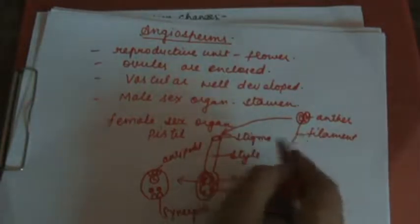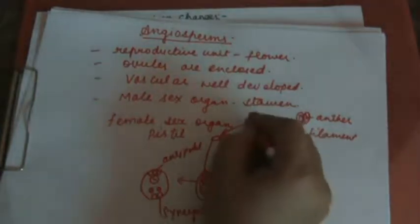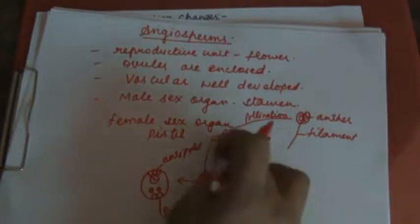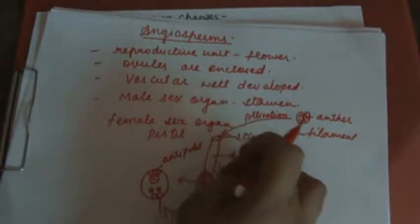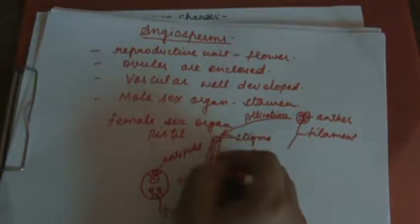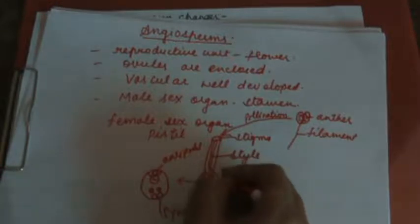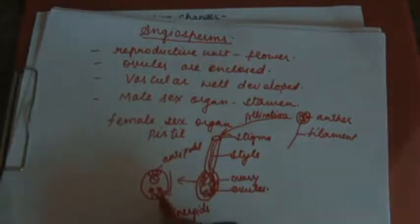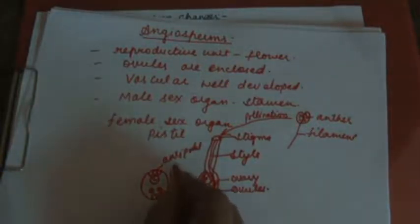Pollen grains from the anther reach the stigma of the same or opposite flower — this process is known as pollination. After reaching the stigma, the pollen grains absorb water and start forming a pollen tube. The pollen tube moves through the style and reaches the ovule, where synergid cells guide the pollen tube to the nucellus.